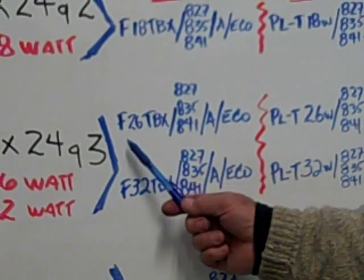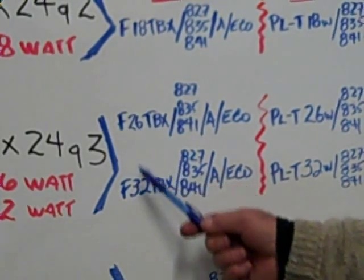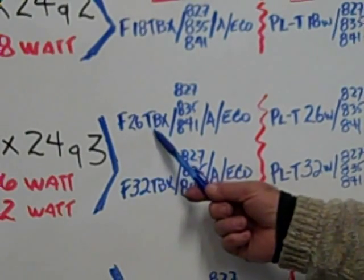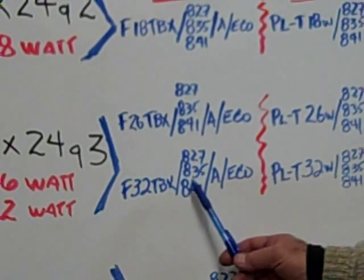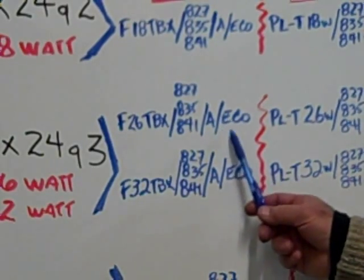GE has a designation of F in front of the wattage, 26 watts or 32 watts, and then TBX and then the color temperature slash A slash ECO.